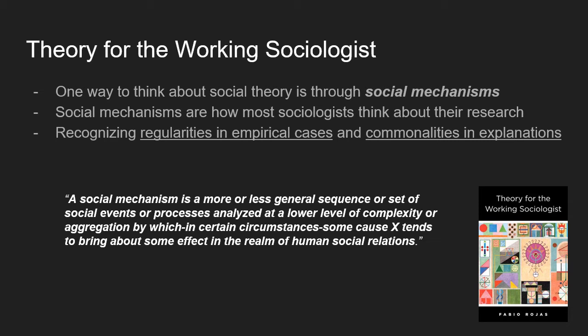What social mechanisms allow you to do is recognize regularities in empirical cases and commonalities in explanations. A social mechanism is more or less a general sequence or set of social events or processes, analyzed at a lower level of complexity or aggregation, by which some cause X tends to bring about some effect Y in the realm of human social relations — thinking about the cause and effects and the social processes that bring about that change.